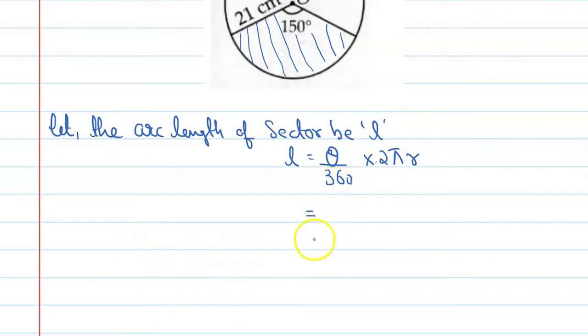it is equal to 150 upon 360 into 2 into 22 upon 7 and r is equal to 21. Alright, now see if you cancel this, and this and this will get cancelled by 3.